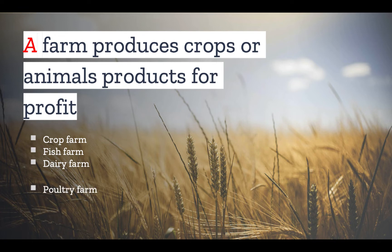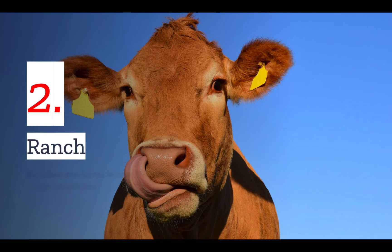Poultry farms, as the name would suggest, are the farms that produce the chicken, turkey, and eggs that millions of Americans consume. And meat farms are the farms that raise animals for the production of beef and pork. And that brings us to number two: ranches.